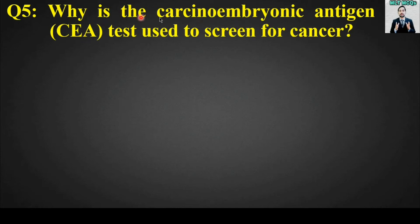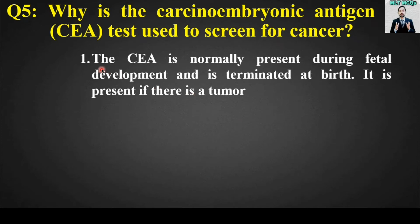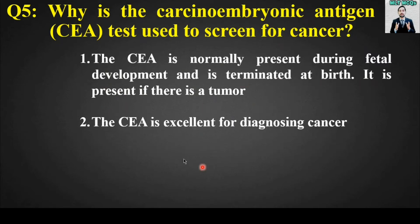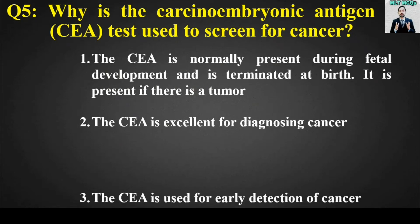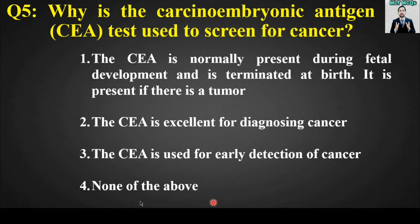MCQ number five: Why is the carcinoembryonic antigen (CEA) test used to screen for cancer? Options: the CEA is normally present during fetal development and is terminated at birth — it is present if there is a tumor; the CEA is excellent for diagnosing cancer; the CEA is used for early detection; or none of the above. The right answer is option number one: the CEA is normally present during fetal development and is terminated at birth — it is present if there is a tumor.